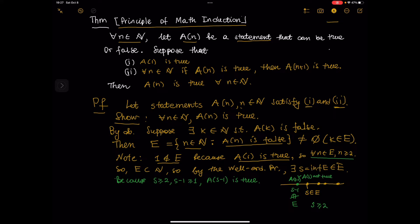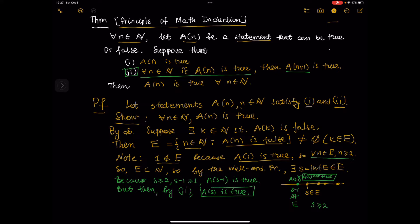But then by condition II, if A(S minus 1) is true, then A(S) is true. So we have that A(S) is not true and A(S) is true — this is a contradiction. And this finishes the proof of the principle of mathematical induction. QED.